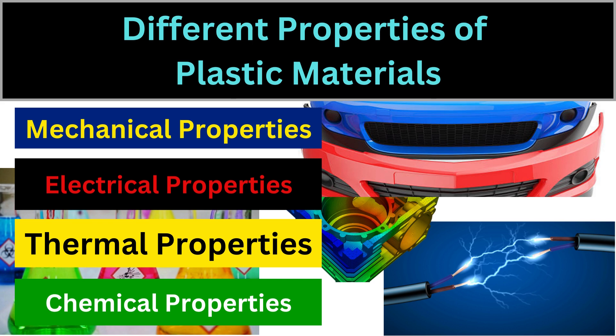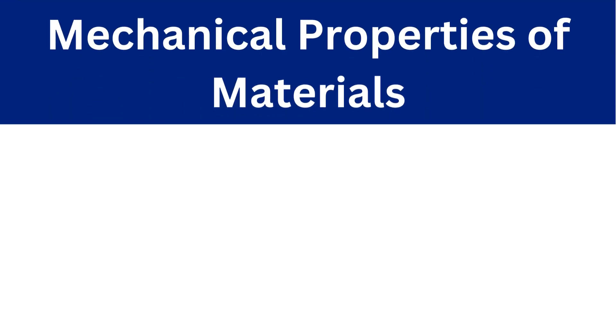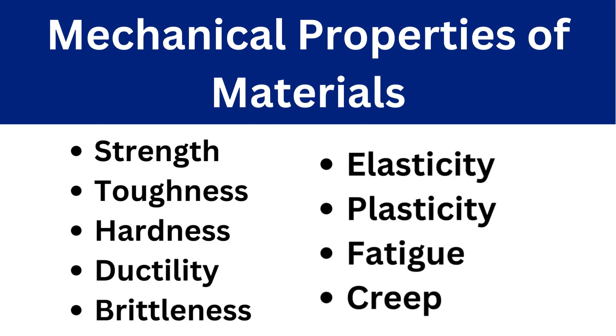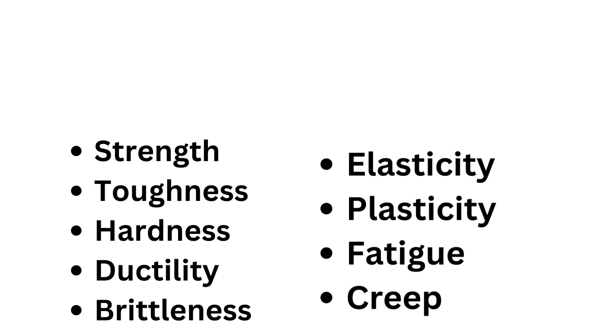Hello friend. In the last video we discussed the different types of properties that we need to check for any material selection, like mechanical properties, chemical property, thermal property and the electrical property. So in this video we will discuss the mechanical properties of material in detail. We will cover a number of properties here, so let's start the video.